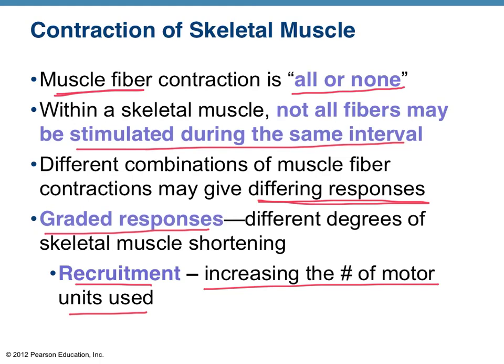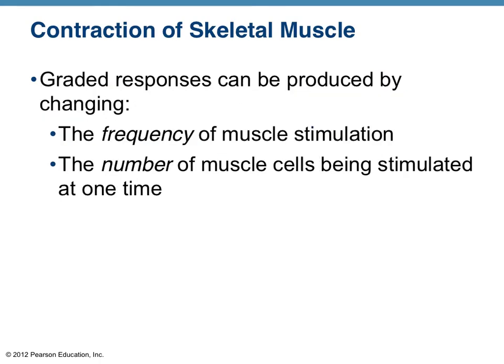So you can get a graded response — if you've ever been lifting weights and first lift something and feel that wasn't enough power or strength, you give it a little more effort. Involuntarily, your muscles do that also. As soon as you pick up a barbell, you're going to recruit more and more motor units to help. Graded responses occur in one of two ways: either increasing the frequency of muscle stimulation — faster, more frequent stimulation creates a stronger response — or increasing the physical number of muscle cells being stimulated at one time.